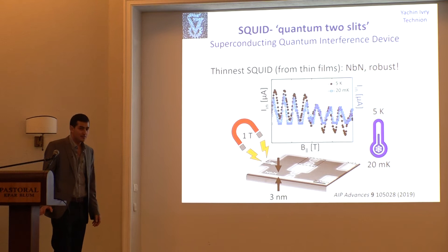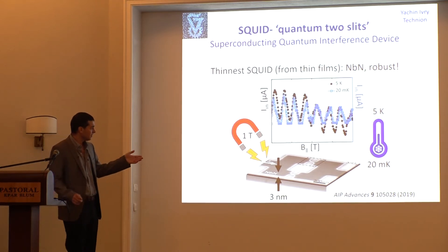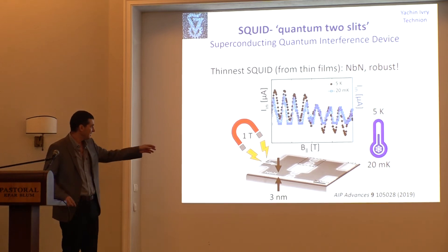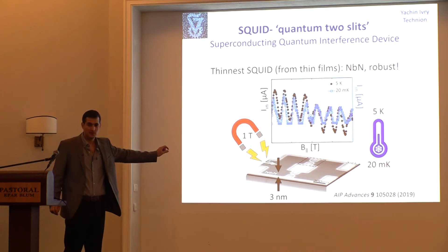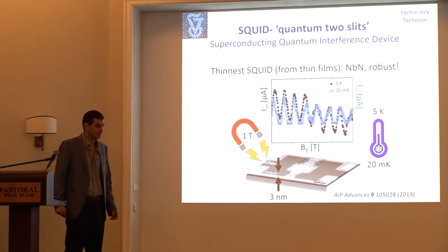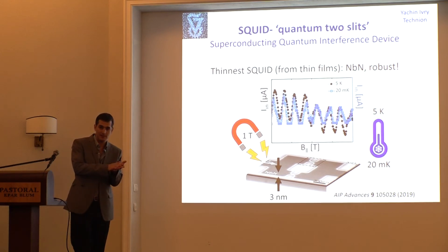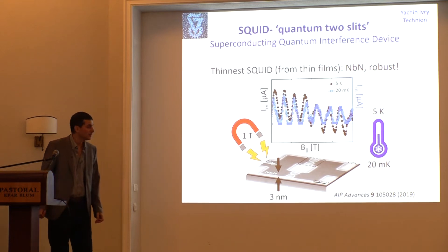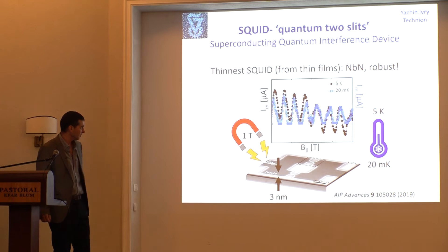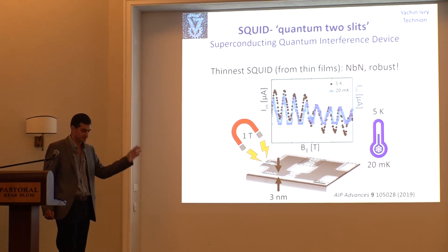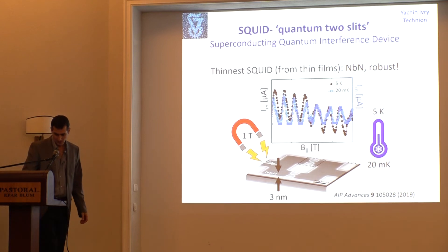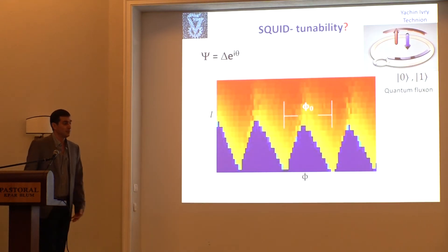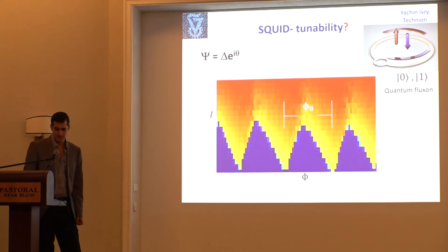The first thing we did — Itamar did this — was to show that we can make SQUIDs on thin films as planar SQUIDs. So instead of having a real Josephson junction with an insulator in between, we have weak links, and still we can get a SQUID interference pattern. We saw that it's very robust under various conditions — temperatures, magnetic fields, et cetera. This means we have a tool we can play around with to tune the quantum properties locally of the Josephson junctions.